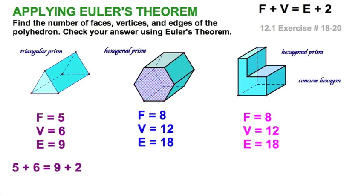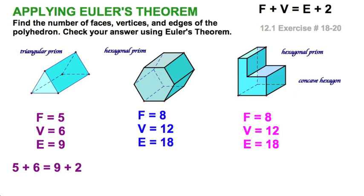Next we have a hexagonal prism. Imagine a hexagon extruded — you'd have two hexagons and six rectangles all the way around, so eight faces total. The vertices: six on each hexagon gives 12. The edges: six on each hexagon — that's 12 — plus another six joining them, for a total of 18 edges. And again, faces plus vertices equals edges plus two: 8 + 12 = 18 + 2.